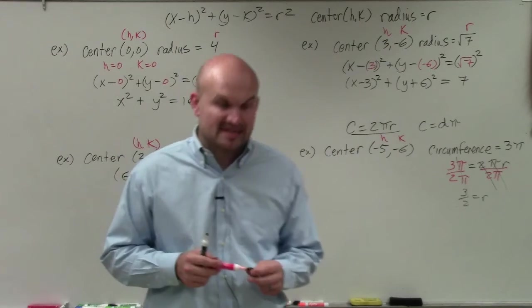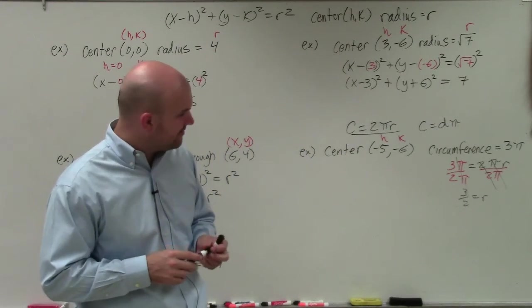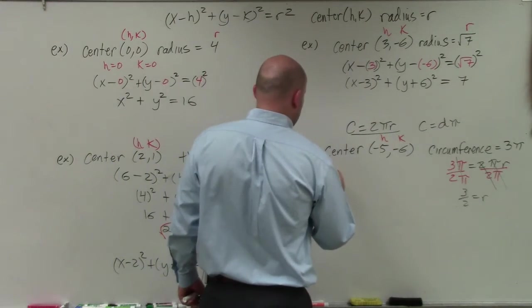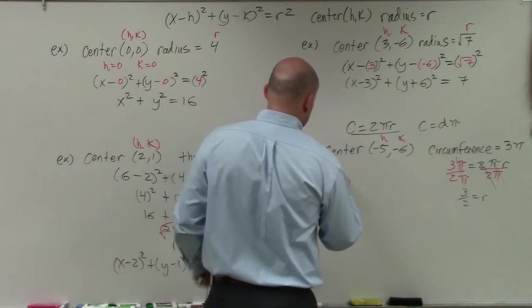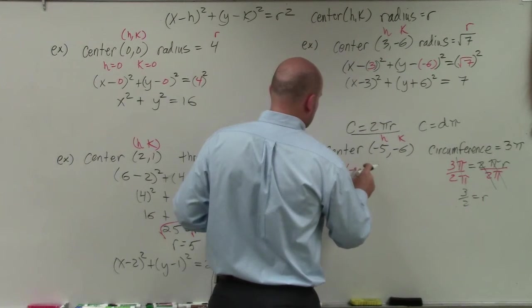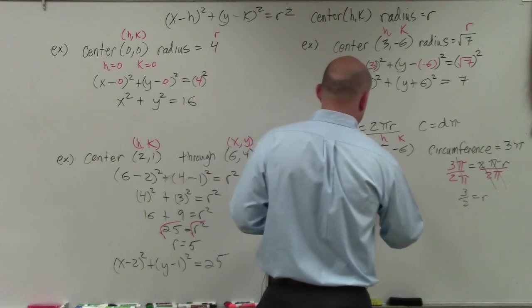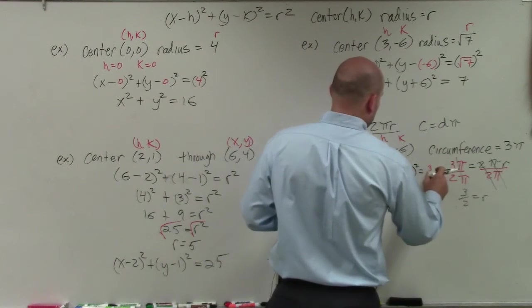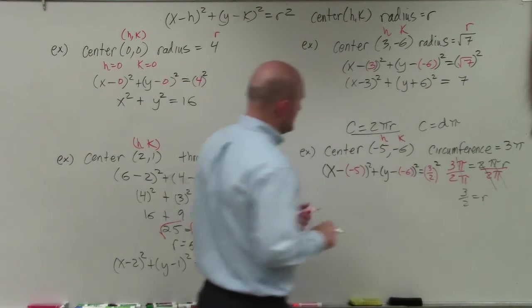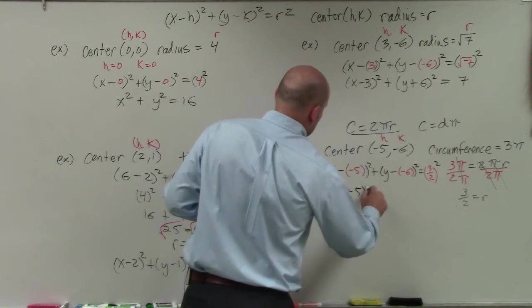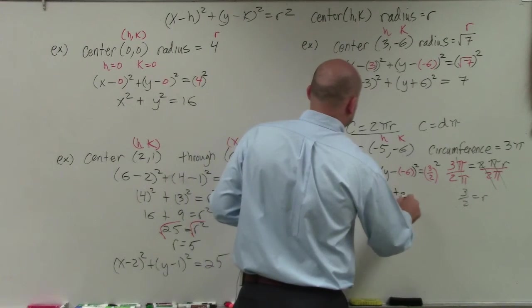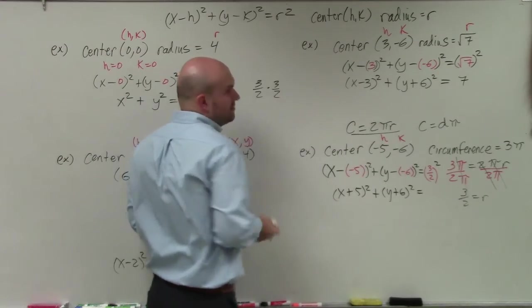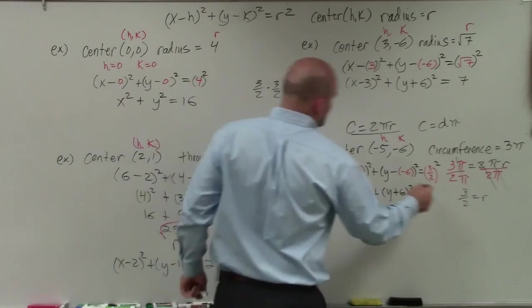Now, you could simplify that as a decimal, 1.5. But I don't like dealing with decimals. I like keeping them just like that. So that's the way I'm going to leave my equation. Now, I'm just going to go ahead and plug this in. So let's see. I have x minus h, which is negative 5 squared, plus y minus k, which is negative 6, equals r squared, which is 3 halves squared. OK. So x minus negative 5 is going to be x plus 5, plus y minus negative 6 is going to be y plus 6, equals 3 halves squared. Now, just remember, 3 halves squared is just 3 halves times 3 halves. Right? That's what square means. So basically, you're multiplying the numerator times the numerator, denominator times denominator, and you're going to get 9 fourths.